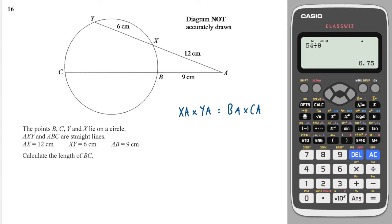So X to A is 12, Y to A is 18, because you have to add both of those two together, B to A is 9, and C to A is 9 plus this distance, which we don't know, and the one we're looking for. But the whole of C to A is 9 plus this distance, which is 12 times 18, which is 216.